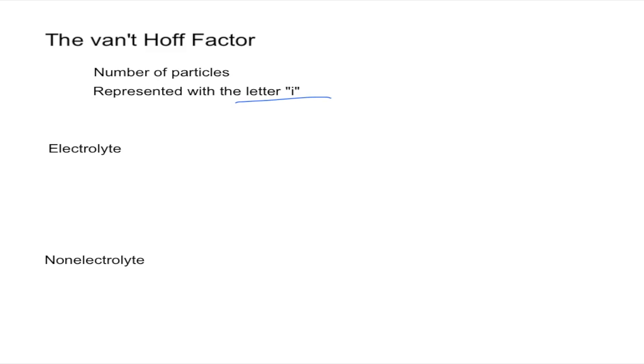When we think about the number of particles that are produced in a reaction, we have to think about ionization. So basically if a reactant is going to be an electrolyte and ionize in water or a non-electrolyte. This is going to ionize and a non-electrolyte won't because it's a molecular compound.